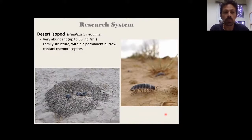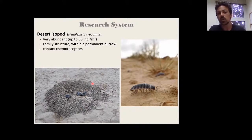I want to first present our study system. I'm working in the Negev desert in Israel, and I'm studying this cool creature which is the desert isopod, and they're very abundant. I'm sure most of you don't know it, but they're very abundant in the Negev desert, up to 50 individuals per square meter. These creatures live in a family structure, just like us, two parents, about 70 siblings, all living within a permanent burrow, as you can see here, surrounded by their feces that they clean out.